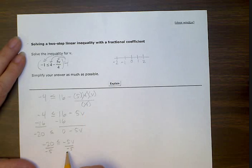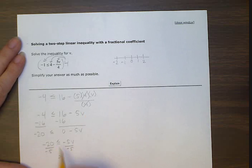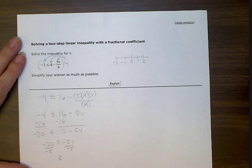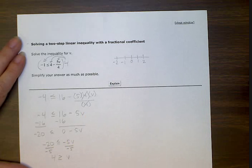So when we divide by this negative five, we are changing it to go in the opposite direction. So we are going to have to switch our sign from a less than sign to a greater than and equal to sign. So this negative five reduces to one, and we are just left with v on this side. Negative 20 divided by negative five gives us a positive four. So our answer is four is greater than or equal to v.